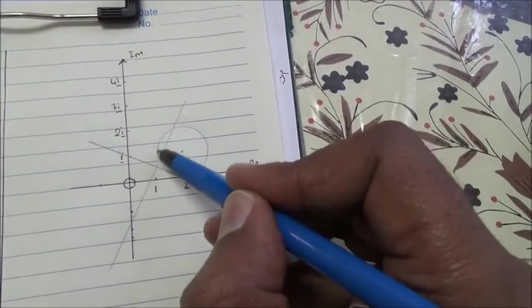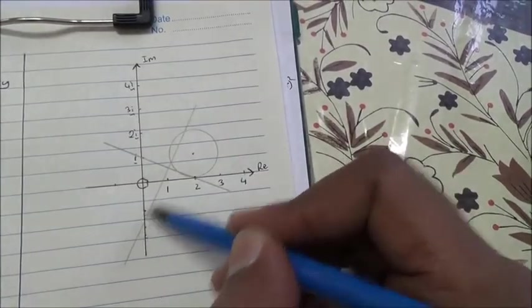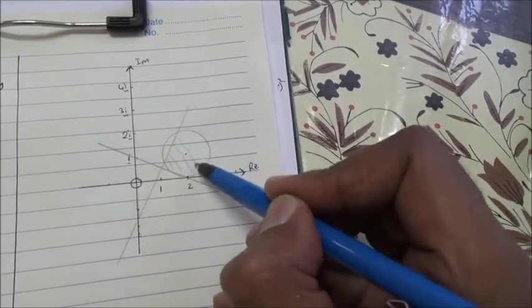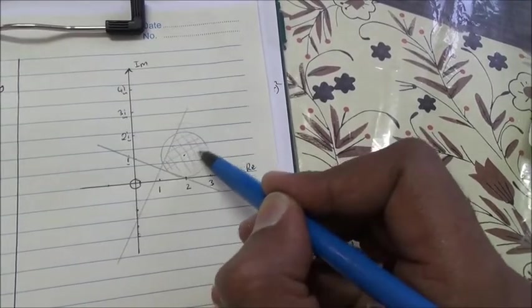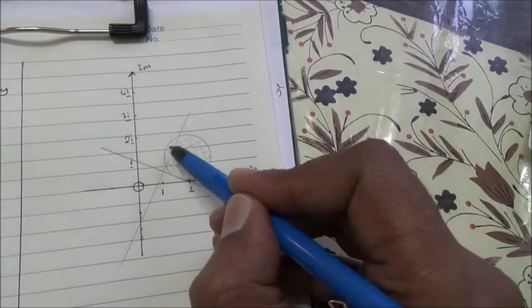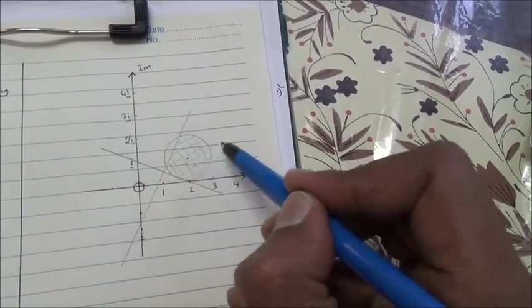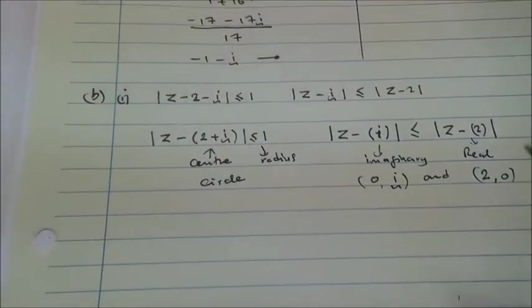Less or equal to 1 means within the circle. So, we're gonna shade the whole circle. But, for this one, which is less, we're gonna double shade here. Because we've shaded the circle completely, we've shaded here as well. However, this was single shading, but this is double shading. So, here we are, for the second part.